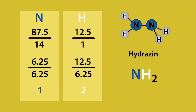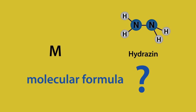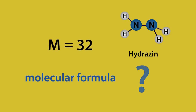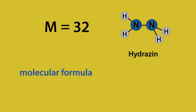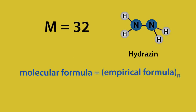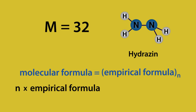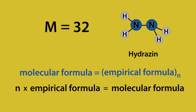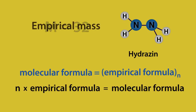But how do we find the molecular formula? The molecular mass for this compound is 32. The molecular formula is the empirical formula times N, where N is the number by which we have to multiply the empirical formula in order to get the molecular formula. I have coined the phrase 'empirical mass' to describe the mass of the empirical formula.